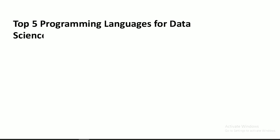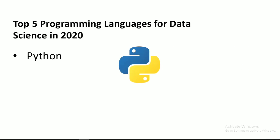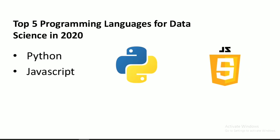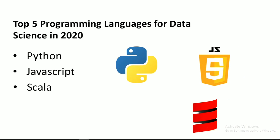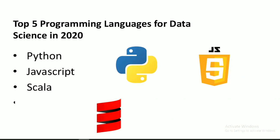Now let's see the top 5 programming languages for data science in 2020. First comes Python, then JavaScript, then Scala, R, and SQL.